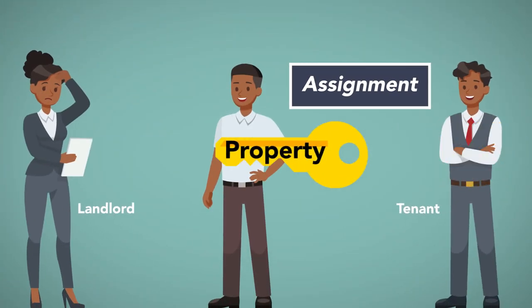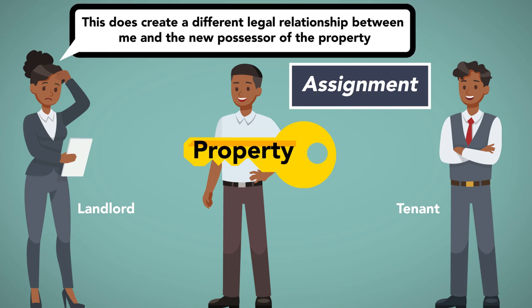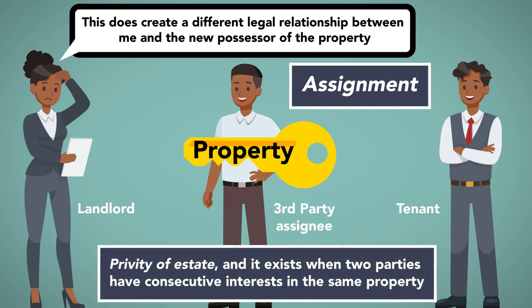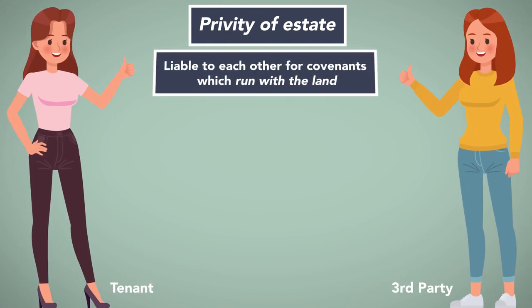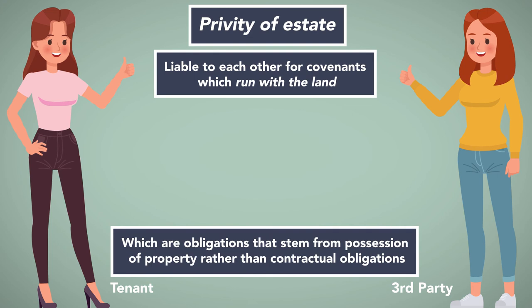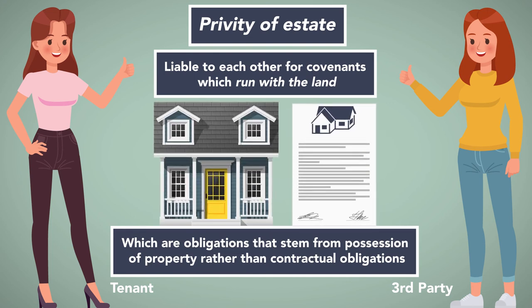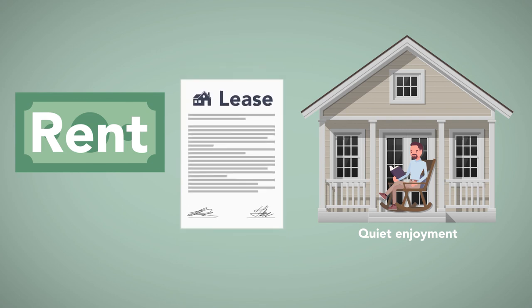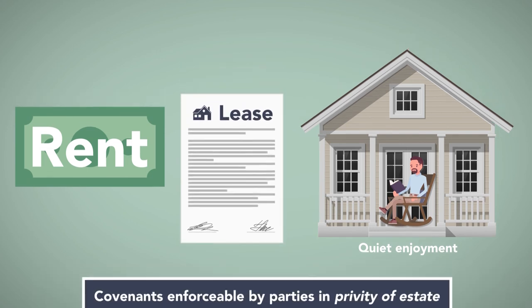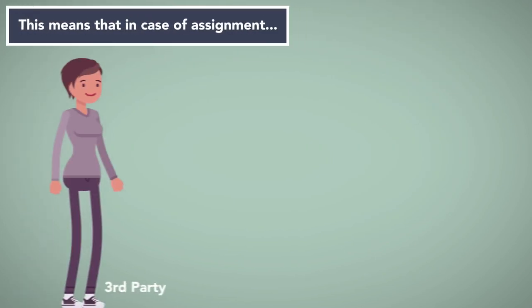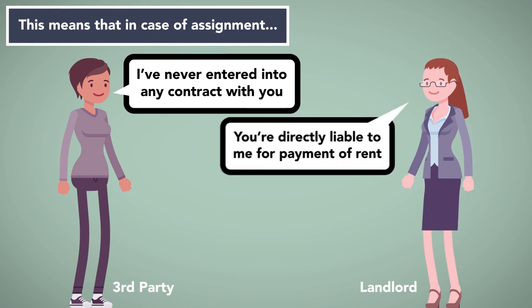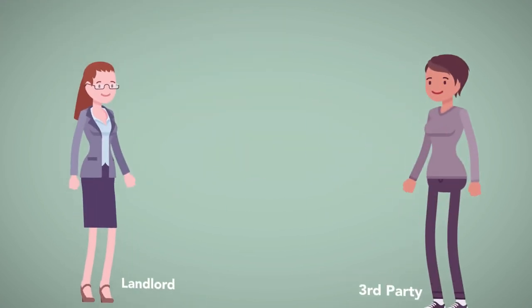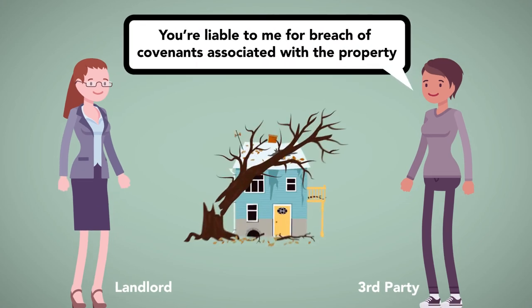However, in an assignment, the transference of the property does create a different legal relationship between the landlord and the new possessor of the property — in this case, the third party assignee. This relationship is known as privity of estate, and it exists when two parties have consecutive interests in the same property. When in privity of estate, the two parties are liable to each other for covenants which run with the land, which are obligations that stem from the possession of property rather than contractual obligations. Although the tenant's payment of rent and the landlord's duty to provide quiet enjoyment are generally provided for in the lease, they are also considered covenants enforceable by parties in privity of estate. This means that in case of assignment, even a third party who has never entered into any contract with the landlord may be directly liable to the landlord for payment of rent. Conversely, the landlord may be liable to the third party for breach of covenants associated with the property.